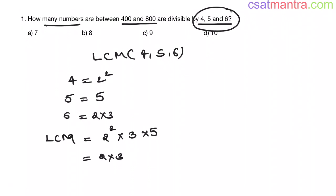Multiplication: 2 squared is 4, times 3, times 5, so 6 into 10 equals 60. The LCM is 60. The numbers between 400 and 800 should be multiples of 60 to be divisible by 4, 5, and 6.